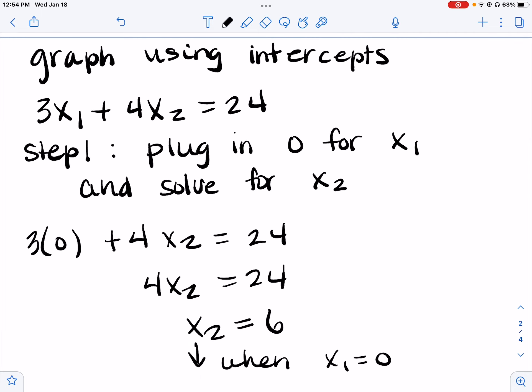To graph using intercepts, let's graph 3x1 plus 4x2 equals 24. Step 1: plug in 0 for x1 and solve for x2. So we would have 3 times 0 plus 4x2. 3 times 0 is 0, so we have 4x2 equals 24. Divide both sides by 4, so x2 equals 6. x2 equals 6 when x1 equals 0.